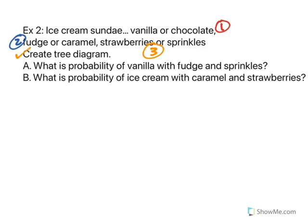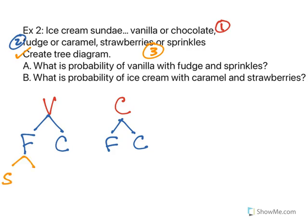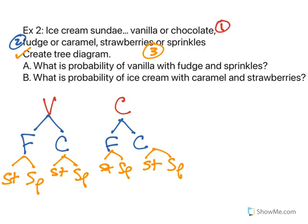So we're first going to start by creating our tree diagram. We have vanilla or chocolate. From there, each one breaks down to fudge or caramel. I'd say both, but that's not an option. And then we have strawberries or sprinkles. I should have used something with a different letter, but this is just who I am.